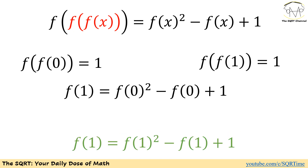So the next thing we are going to do is try to find f of 1. Let's review what we have so far: we have f of f of 0 and f of f of 1. We found f of 0 in terms of f of 1. Now using x equals 1, we know that f of f of 1 is 1, so the left hand side is just f of 1, and on the right hand side we have f of 1 squared minus f of 1 plus 1.